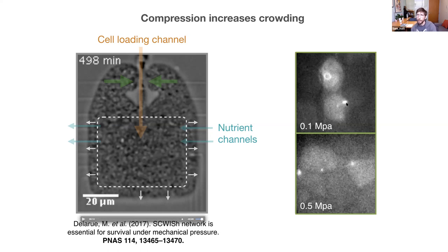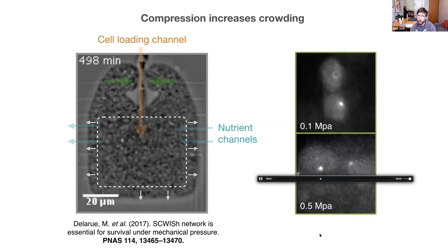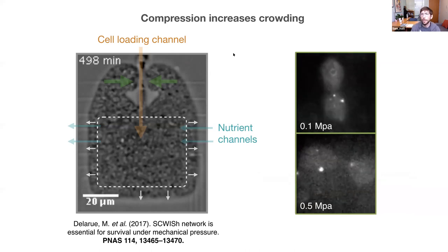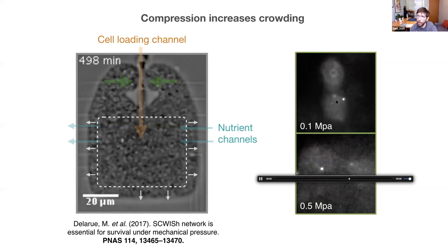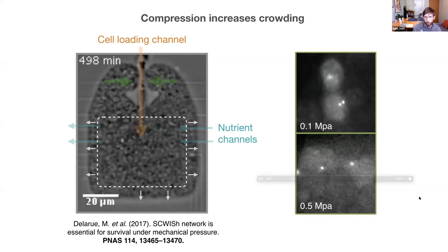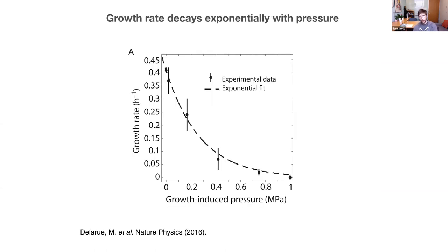As the cells grow and divide, they build up compressive stress, distorting the elastic PDMS chamber. By looking at how much the chamber is distorted and knowing the Young's modulus, we can calculate how much pressure is in the system. Looking at an RNA molecule inside the cell at low pressure, it moves relatively freely; at higher pressures, molecules move much more slowly — we think this is a consequence of this jamming effect. And the growth rate of cells shows an exponential decrease as a function of growth-induced pressure.